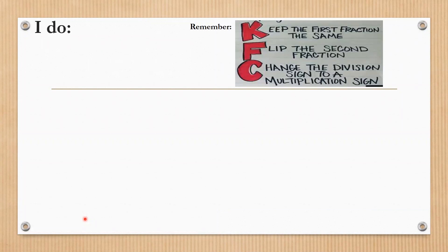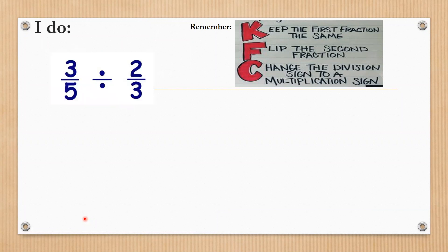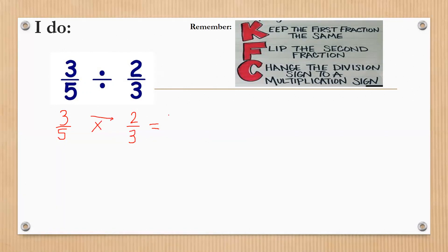Always keep KFC in mind. Here is a problem I'll show you. Using KFC, keep the first fraction — 3/5 — then flip the second fraction and change your sign to multiplication, then multiply across: 3 times 2 is 6, and 5 times 3 is 15.